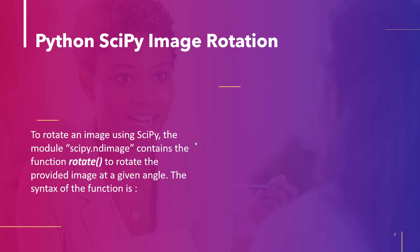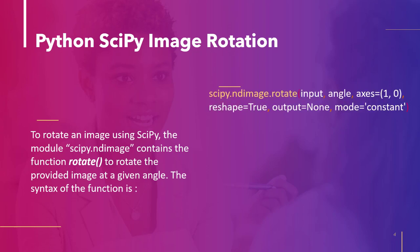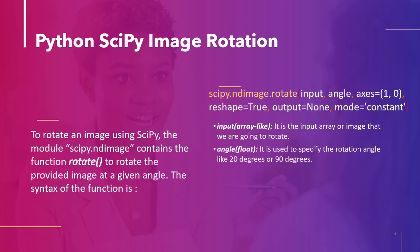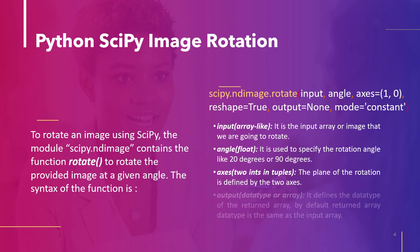The module SciPy.ndimage contains the rotate method, which rotates the given image at a specific angle. The function has several parameters. Input: it is the input array, or the array of values of images. Angle: it describes the rotation angle such as 20 degrees or 90 degrees. Axis: it represents the rotation plane that is determined by two axes. Output: it is used to specify the data type of the returned array, which is the same as the input array by default.